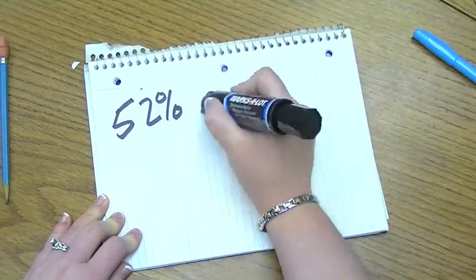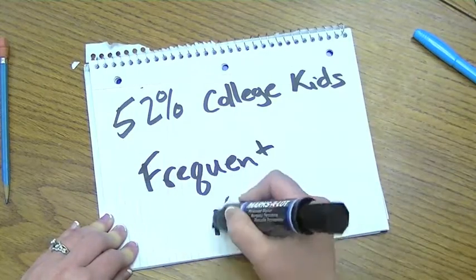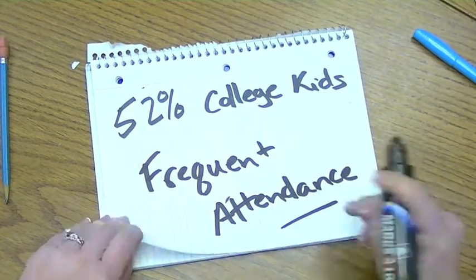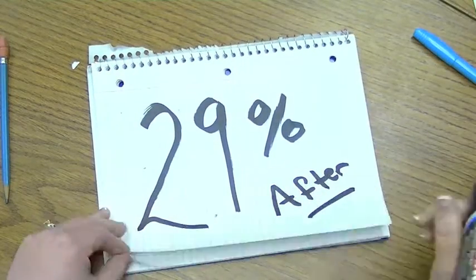The Research Institute at UCLA found that 52% of college students reported frequent church attendance the year before they entered college, but only 29% continued frequent church attendance by their junior year.